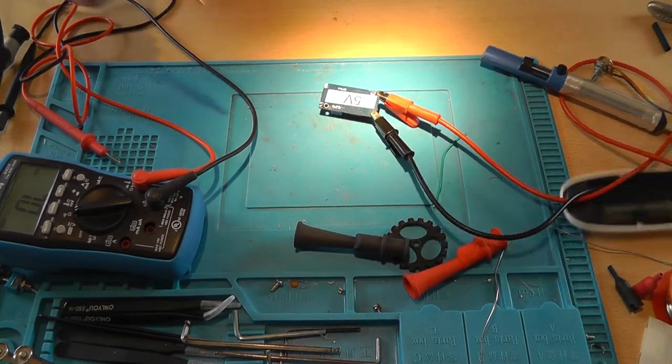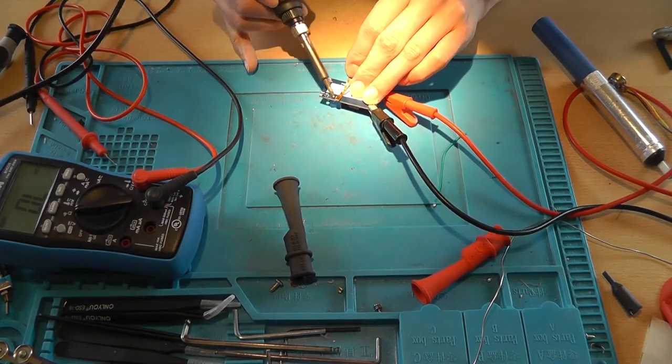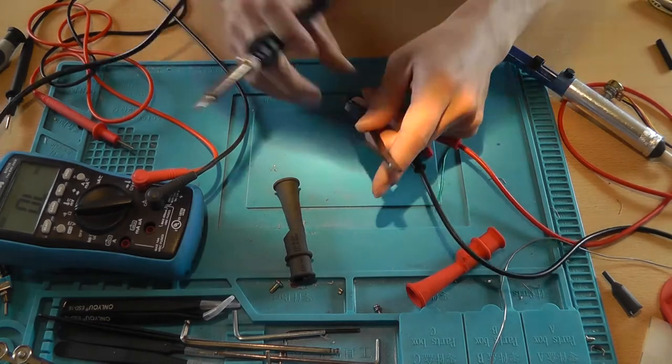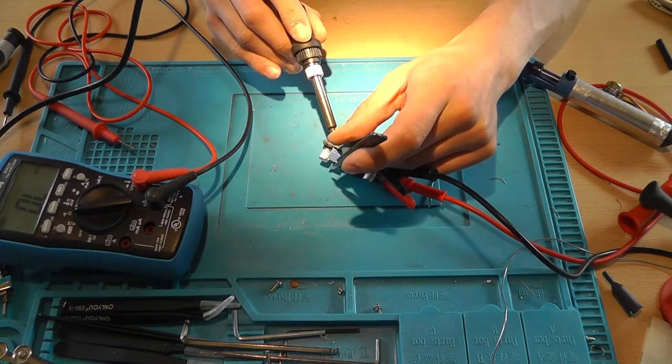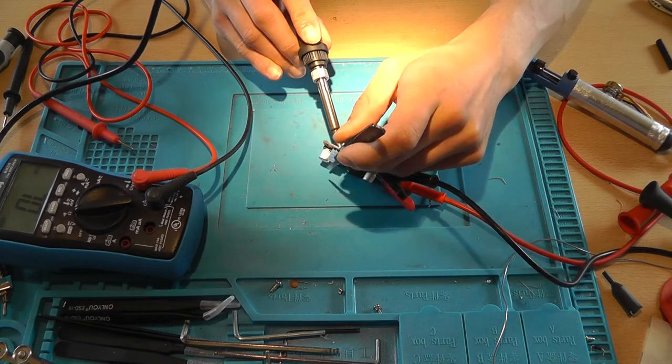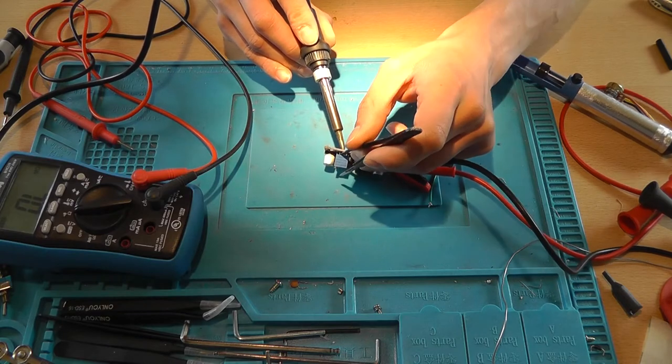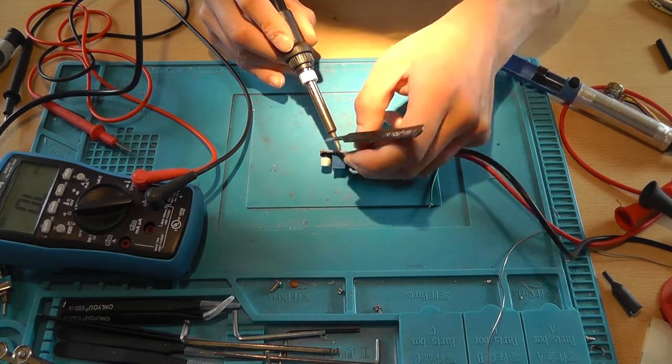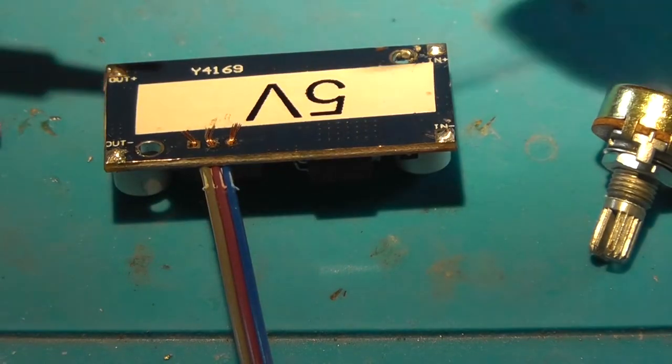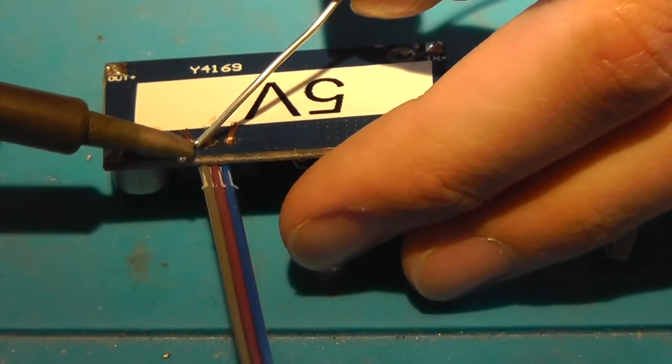Here you can see me desoldering the potentiometer to be able to attach my own potentiometer to it. The stock board comes with a 10k, 25-turn pot meter. To know which value potentiometer you want to use, you need to use the stock pot meter and trim the output voltage to your desired output voltage, and then measure the resistance that your pot meter currently has.